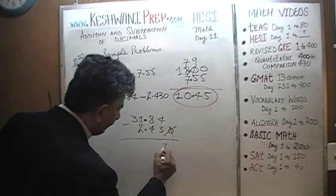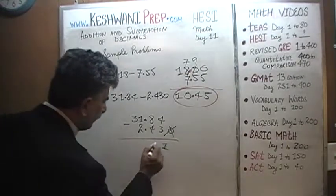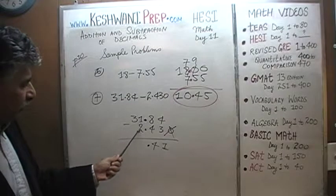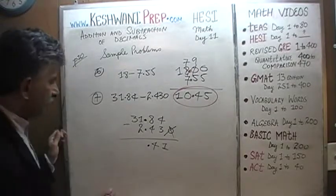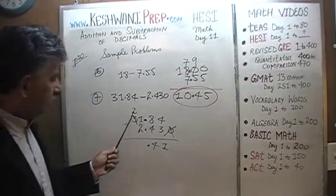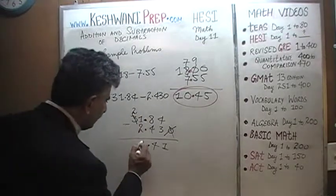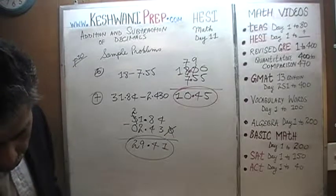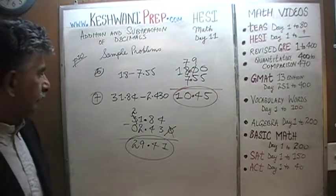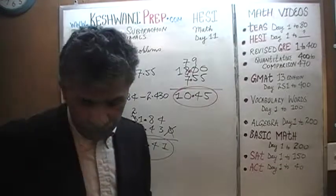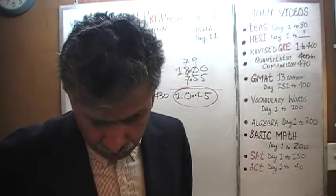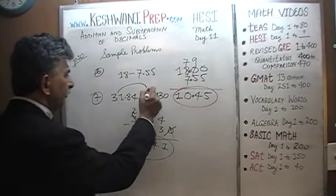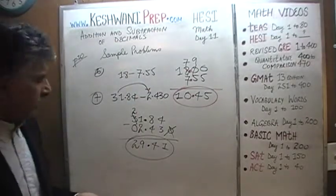Now we bring down the decimal point. When we get here, it gets a little tricky because we cannot subtract 2 from 1. So he goes next door and borrows 10 from him. The 30 becomes 20. The 10 comes and joins this guy and becomes 11. 11 minus 2 is 9. And then 2 minus 0 is just 2. The answer is 29.41.